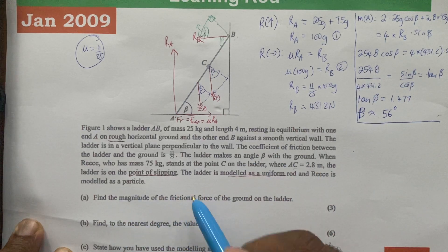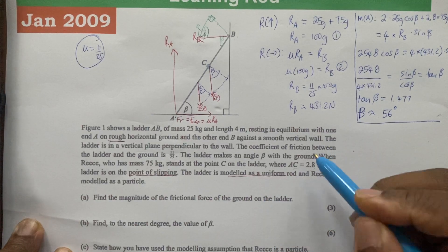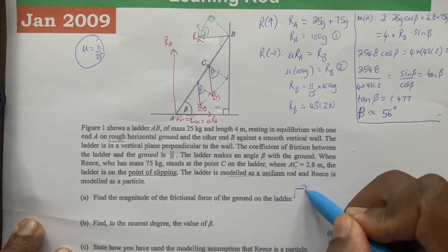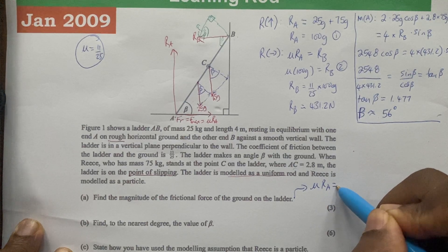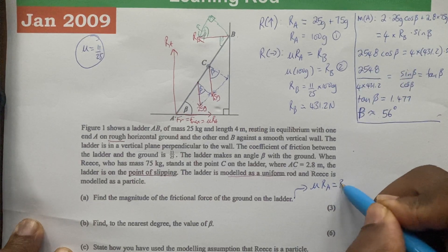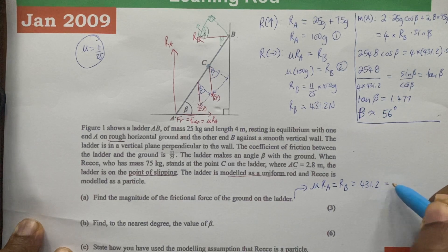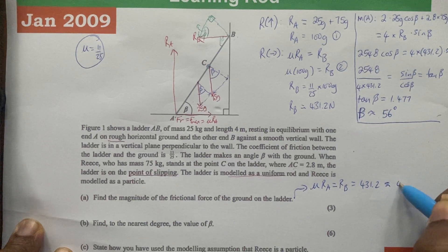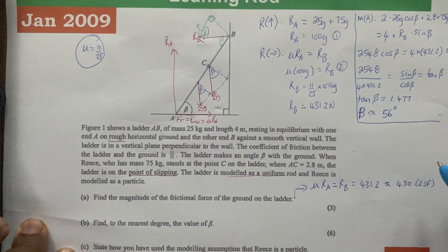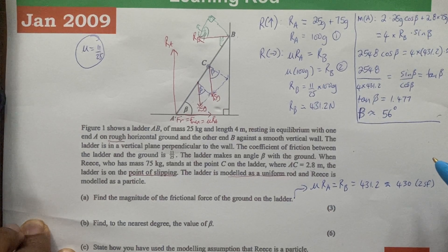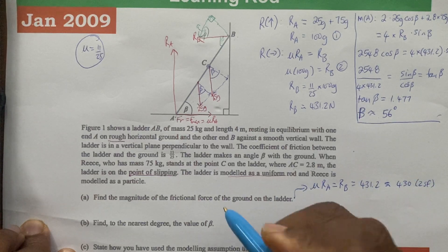If we now go to the question, find the magnitude of the frictional force of the ground on the ladder. We're looking for mu times RA, which is the same as RB, which is equal to 431.2, which would be rounded to 430 to two significant figures. Because the calculation involves gravity, we tend to want to write our final answer to either two or three significant figures.